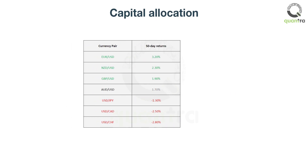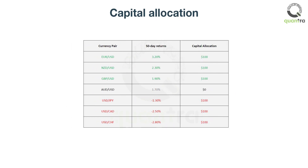We have allocated an equal amount to each of the currency pairs. Another approach would be to allocate capital in proportion to the expected return or expected risk-adjusted returns.